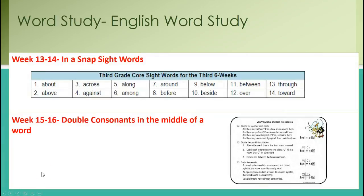The word study part of your reading workshop should look like this. The English word study is in a pacing guide for you. Weeks 13 and 14 you have in-a-snap sight words. These are the sight words you'll be looking at for that week — securing those, including words like 'between' and 'through' that a lot of times they don't secure. Hold them accountable for those sight words.